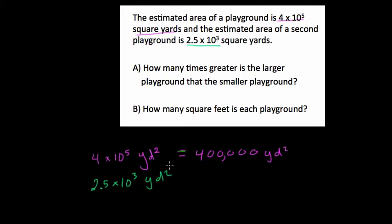And then down here, we can look at this. Multiplied by 10 to the 3rd, that moves our decimal three times to the right. So that would be 2,500 square yards, a much smaller number.